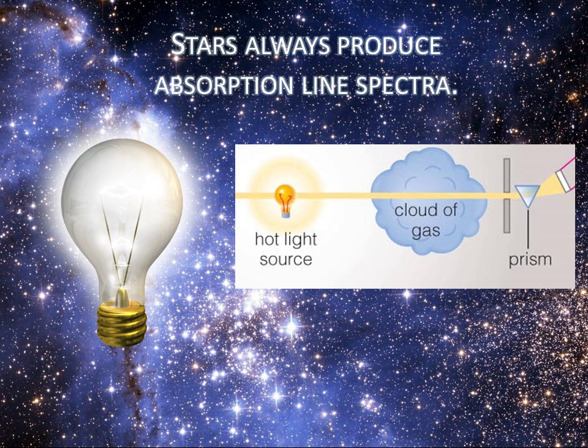The core of the star is underneath the stellar atmosphere, just like the light bulb is behind the gas cloud in our absorption line spectrum example. By looking at the spectrum of a star, we can determine exactly what elements its atmosphere is made of.